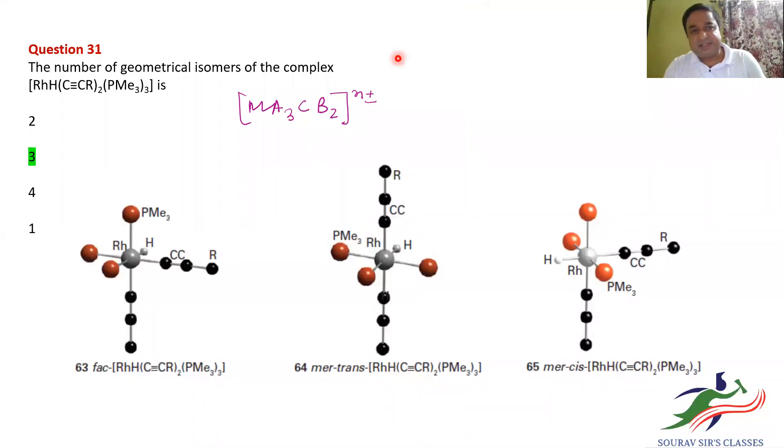Hello, welcome to Solves for Classes. Here the question is 31, number of geometric isomers of the complex [Rh(H)(C≡CR)(PMe₃)₃]. It is better to write this complex in a simple notation, that is MA₃CB₂. Now it becomes easier to imagine. This is like counting geometric isomers in coordination chemistry.